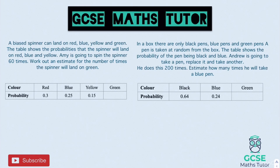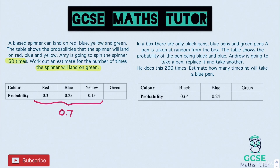Here are two practice questions — pause and have a go. For the first one, Amy spins a spinner 60 times. We need to find the missing probability for green. Adding the given values: 0.30 + 0.25 + 0.15 = 0.7, or 70%. So the missing decimal for green is 0.3, or 30%.